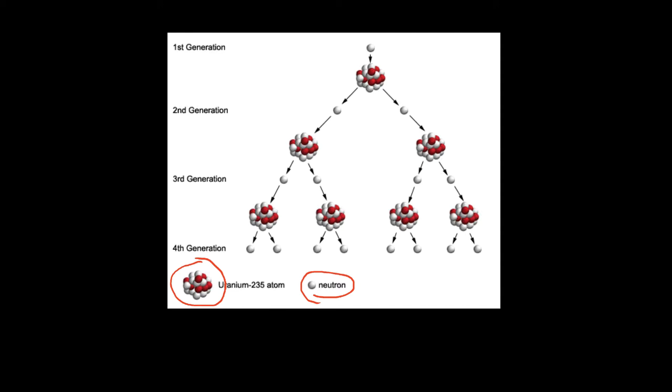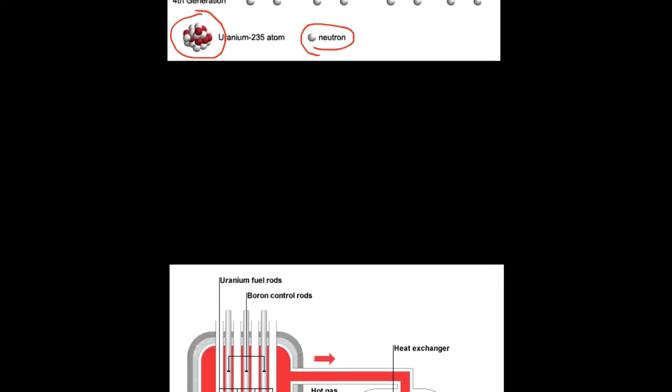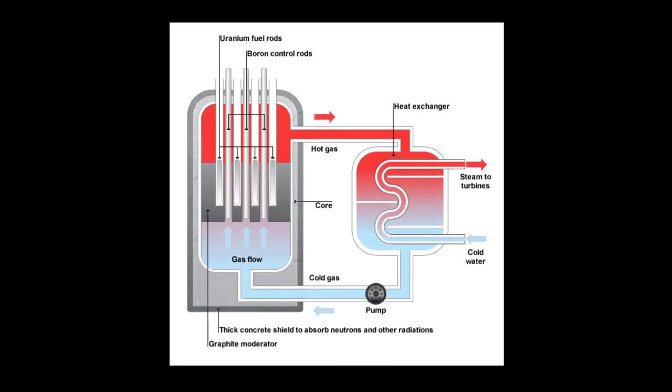Let me show you a quick diagram of a power station. What we have are these uranium fuel rods. The fuel for this nuclear power station is uranium. Those will be uranium-235, fissionable isotopes of uranium. And what's going to happen is the process is fission as we saw before. But what we also have are these control rods.